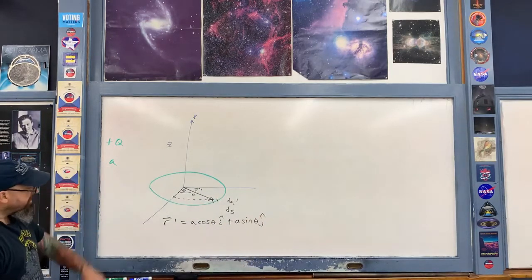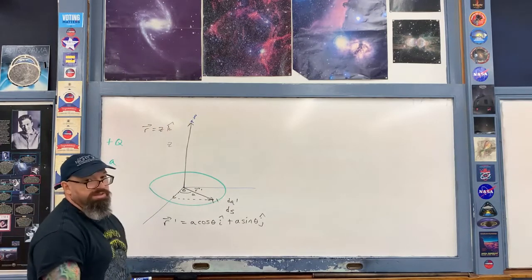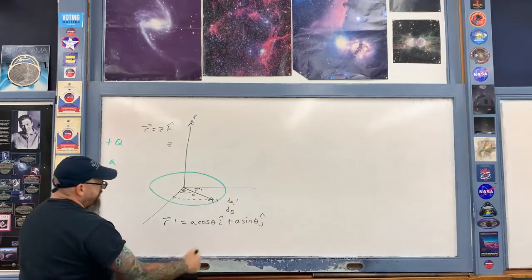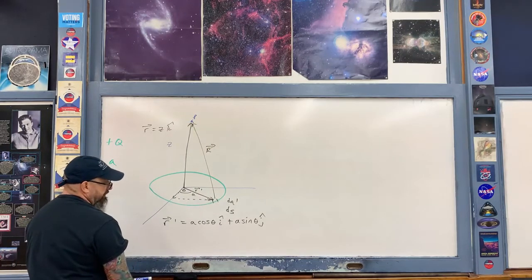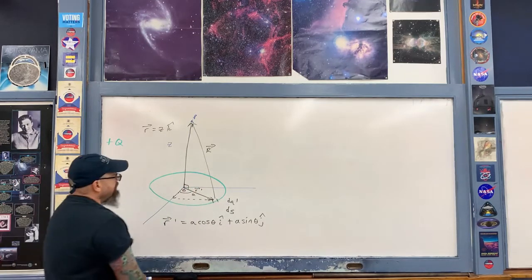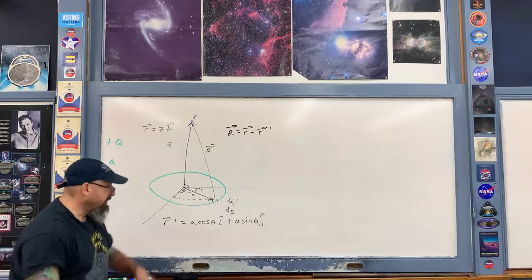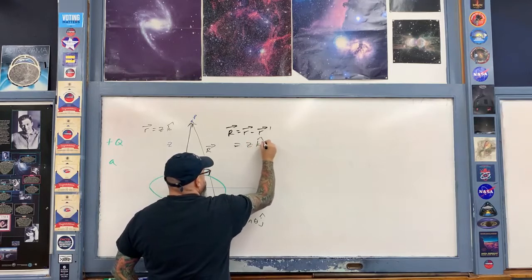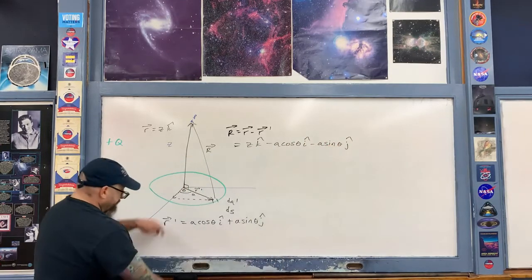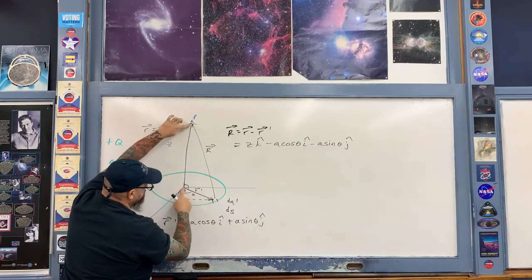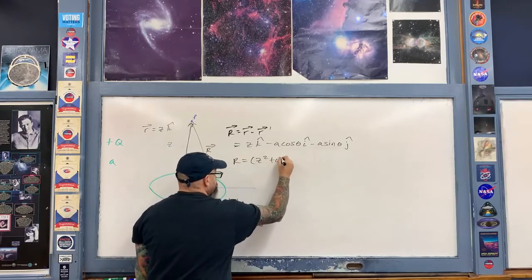Our point P in space gives us the little r vector, which is just z k-hat, just like it was in the infinite line of charge calculation. Capital R is r minus r prime, so that's z k-hat minus a cosine theta i-hat minus a sine theta j-hat. The magnitude of capital R is just the hypotenuse of a right triangle — one side is a, the other is z — so the magnitude is the square root of z squared plus a squared, or (z² + a²) to the one-half power.